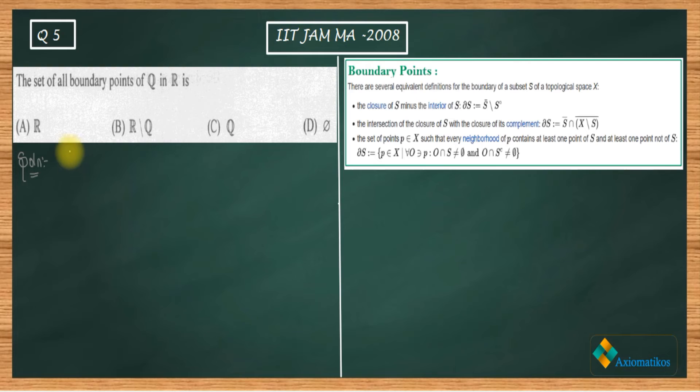So what we have according to the definition - let me change my pen, it is not white. So we have to find out the boundary points for Q. So boundary point is denoted by del of Q. This represents the boundary points of Q. And according to the definition, it is equal to Q closure minus Q interior.